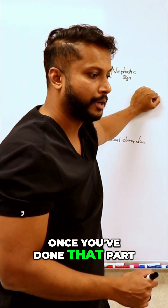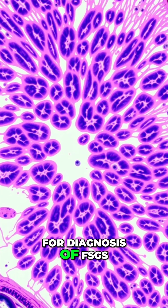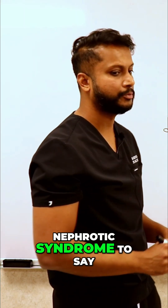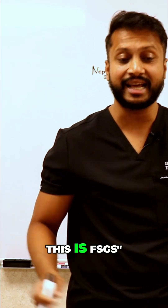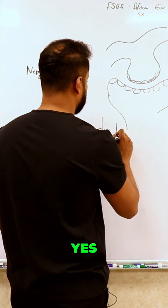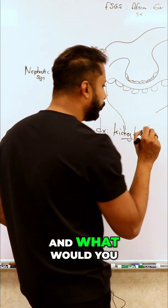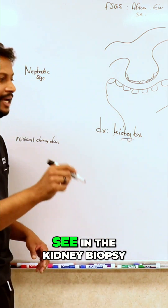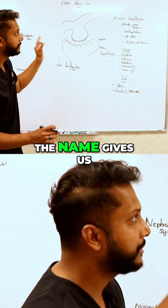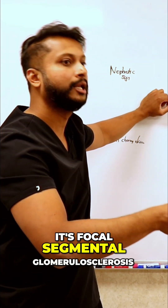Once you've diagnosed nephrotic syndrome, what's the next step for diagnosing FSGS? You have to do a kidney biopsy. And what would you see on that kidney biopsy? The term itself gives us the answer — it's focal segmental glomerular sclerosis.